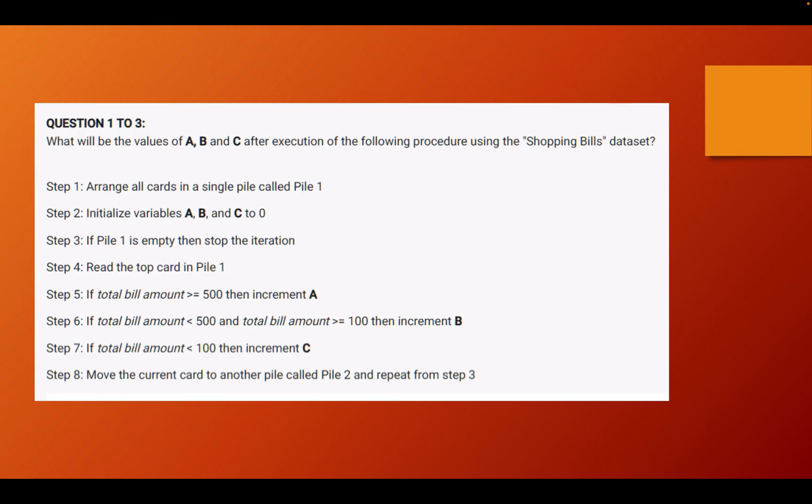Similarly step 7 says that if you see any bill amount that is less than 100, that means from 1 to 99 because you can purchase something for a minimum of 1 rupee, if you see any of these bills you have to increment C. And then step 8 finally says that move the current card to another card called pile 2 and repeat from step 3.